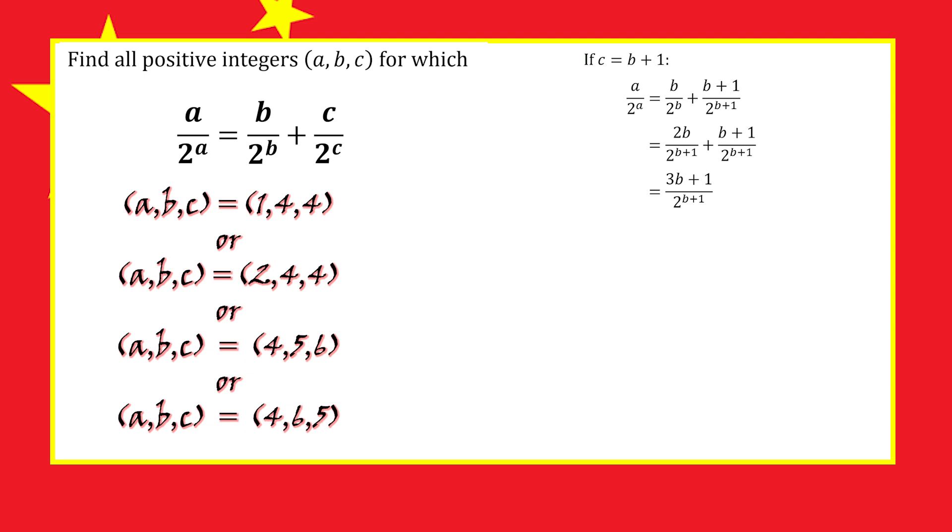Again, we'll show this using an inequality. Adding b over 2 to the b plus b plus 1 over 2 to the b plus 1 gives 3b plus 1 over 2 to the power of b plus 1, which is always less than b minus 1 over 2 to the b minus 1 for all b greater than 5.